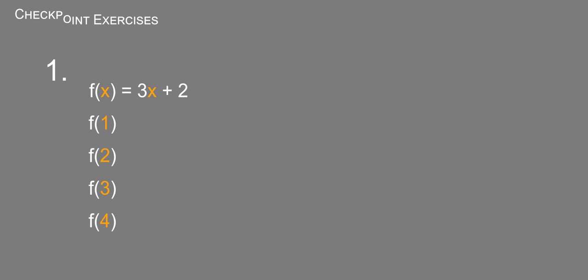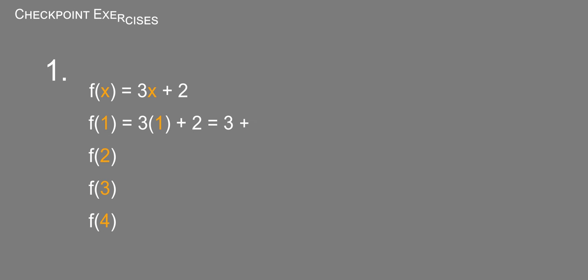In order to do this we simply substitute in the input value for x to find the output. We substitute 1, 2, 3, and 4 for x. So f of 1 is simply 3 times 1 plus 2, which equals 3 plus 2, which equals 5.